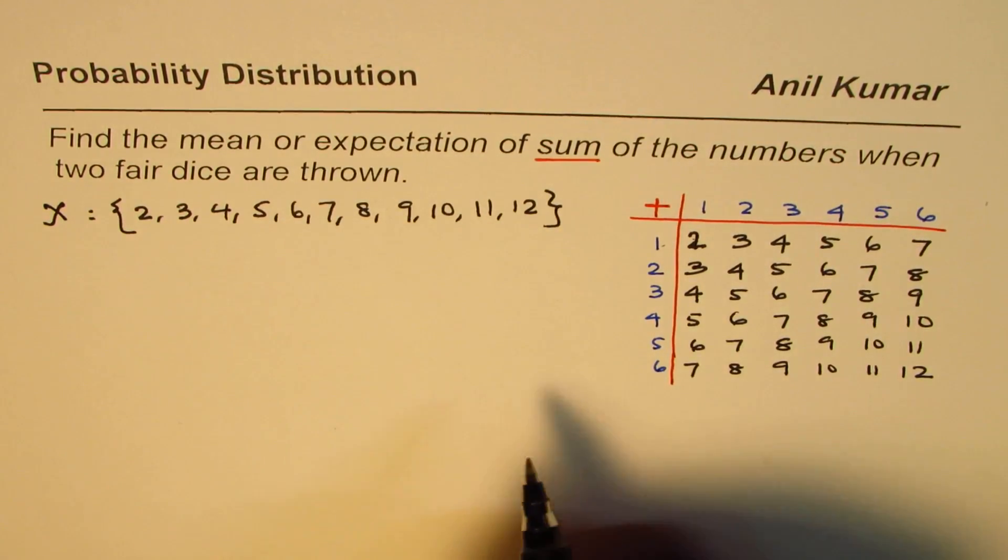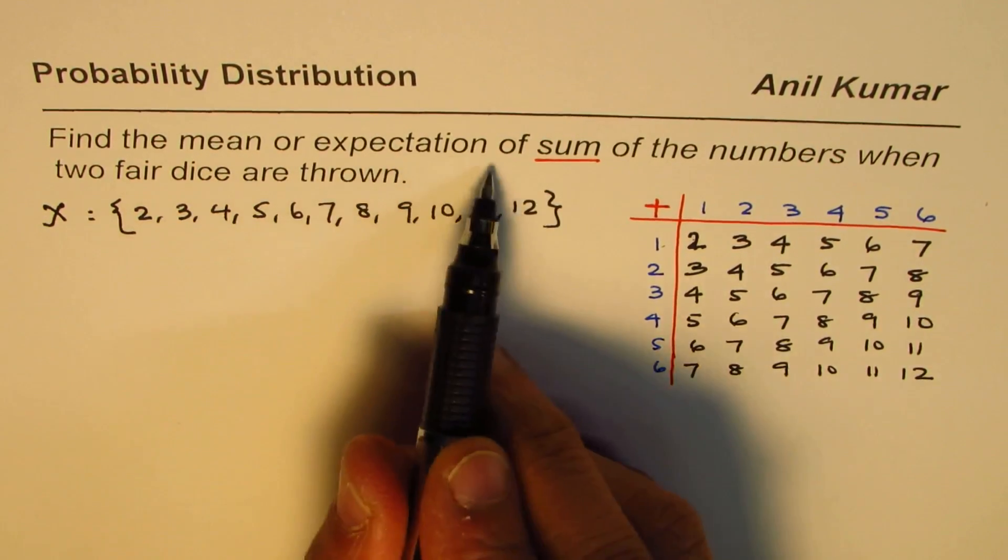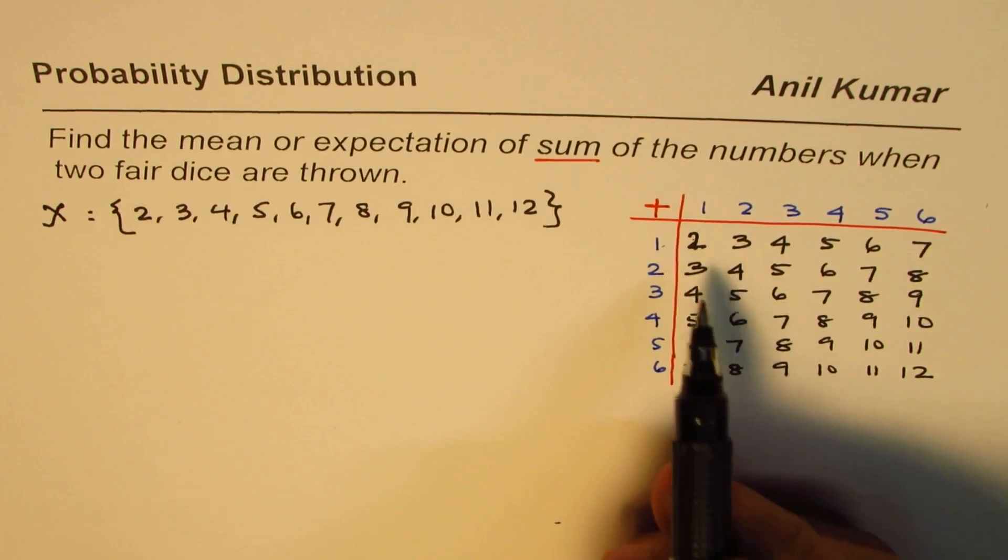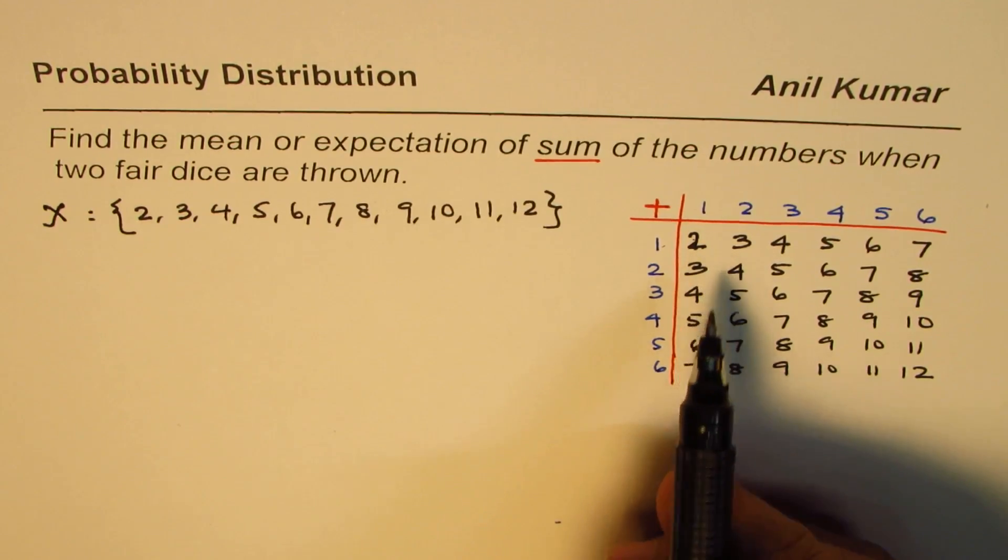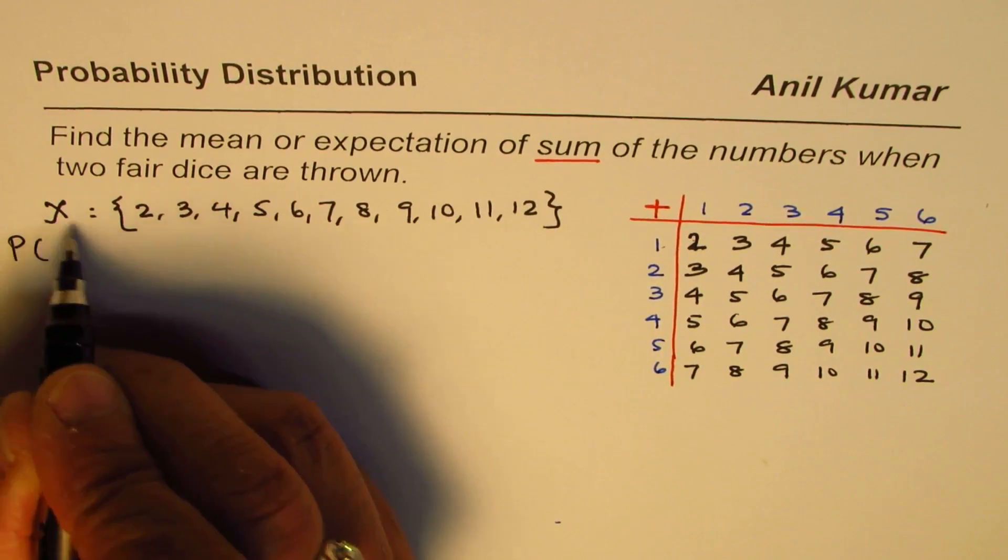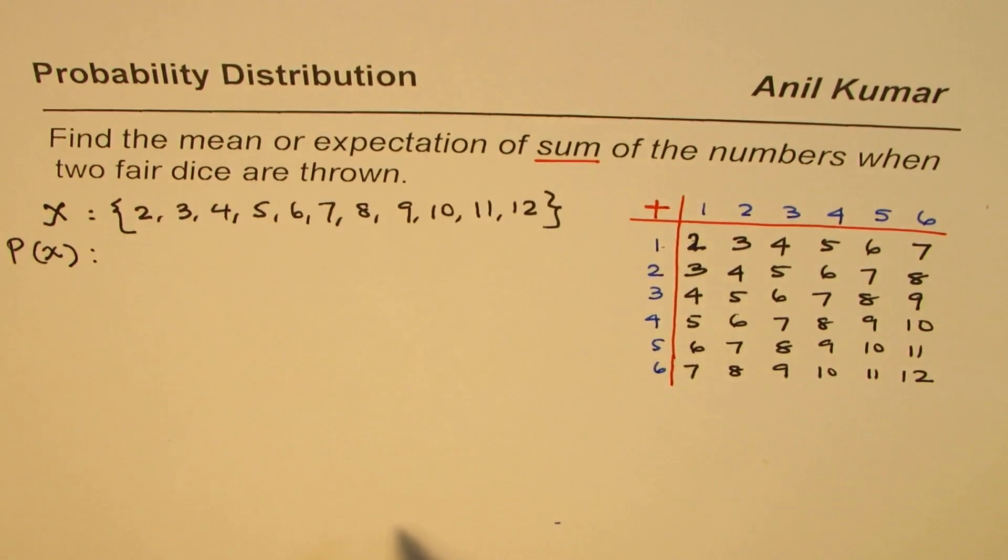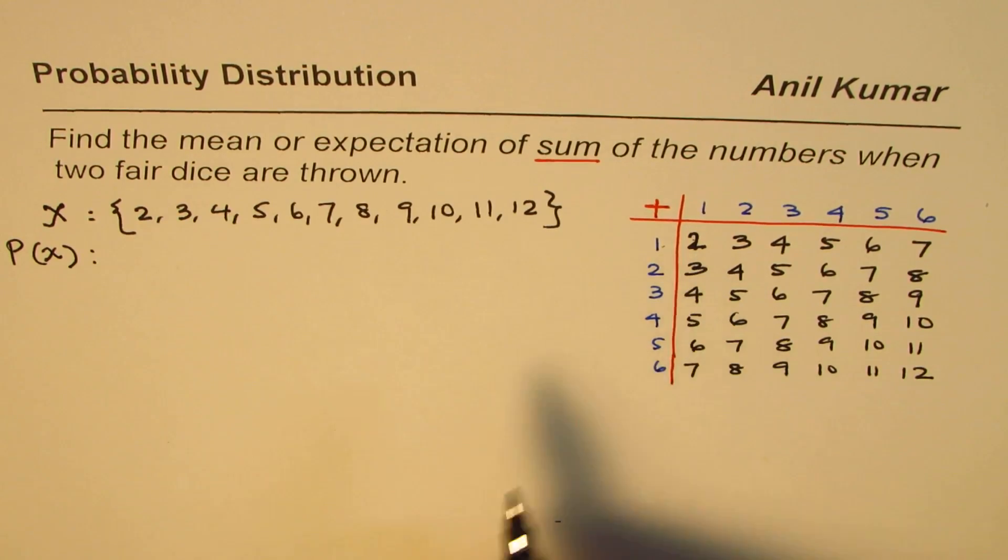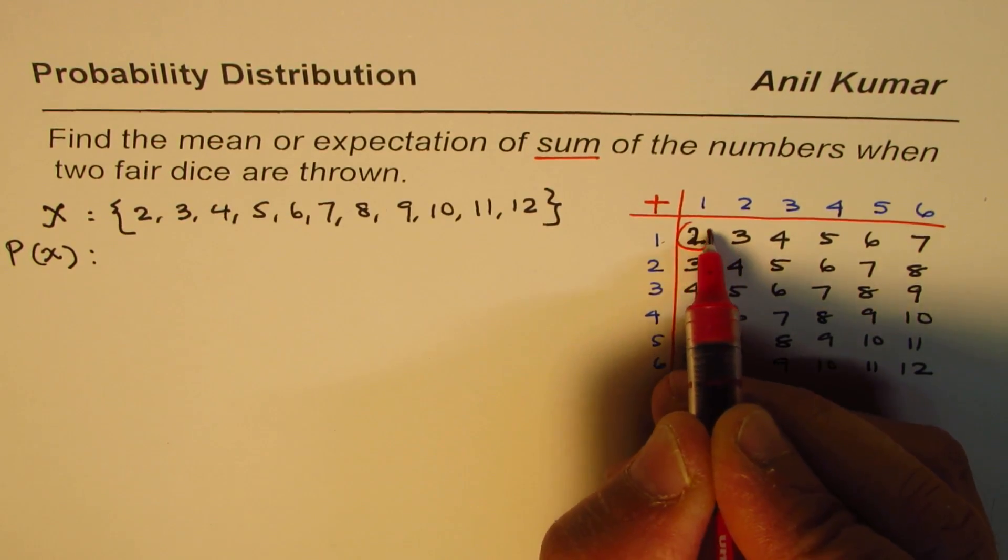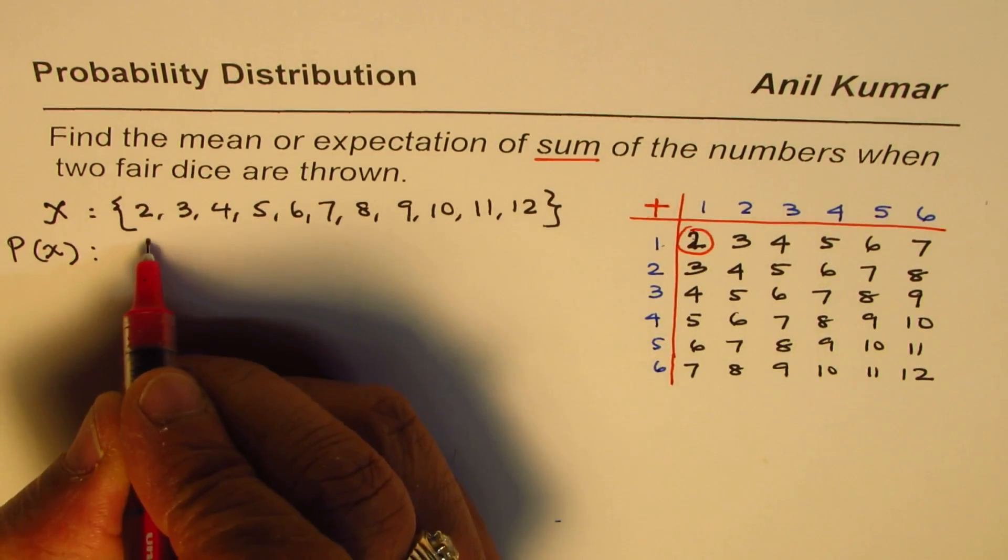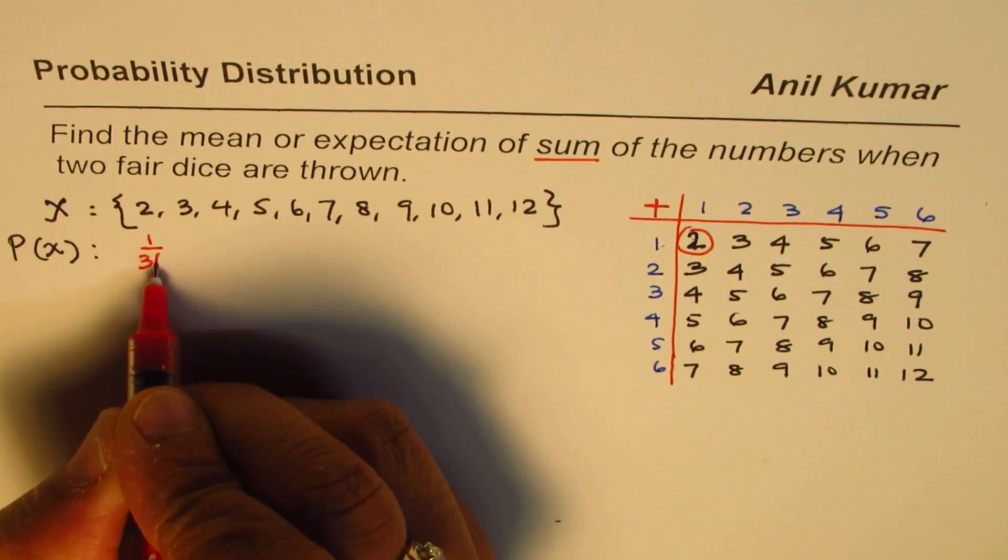To find the mean or expectation of the sum, we have to find the probability of each value. What is the probability of getting 2? How many 2s are there? We have only one 2. So the probability for 2 is 1 out of 36.